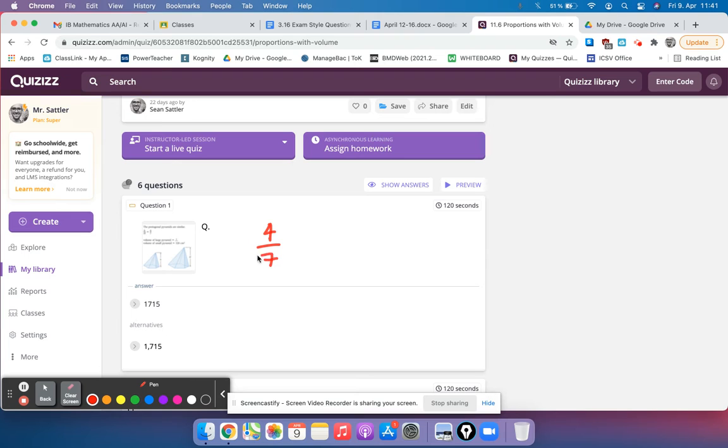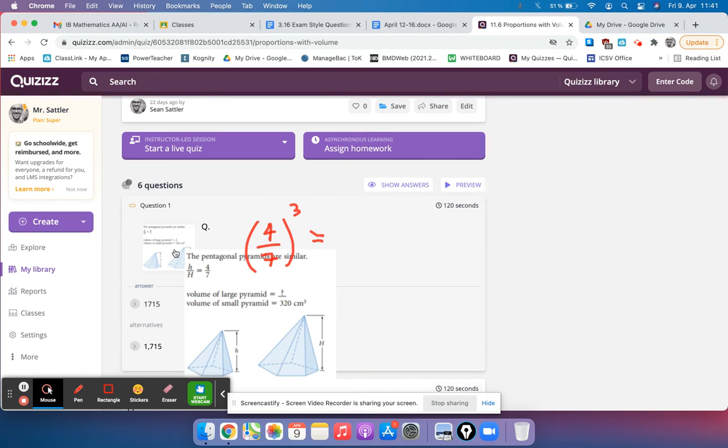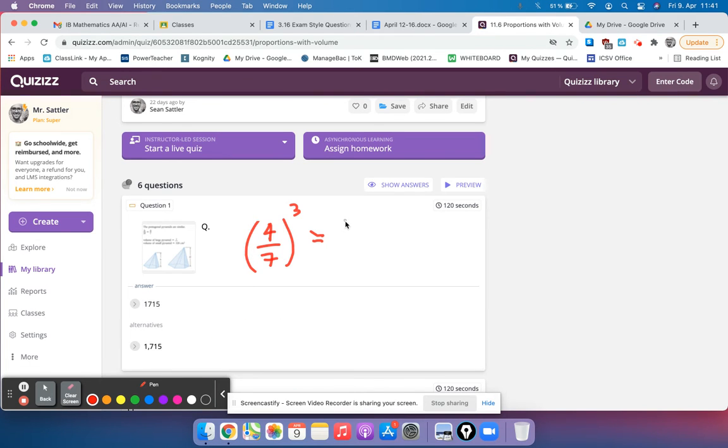4 over 7 cubed is equal to the ratio of the small volume, which is 320, and the large volume will go on the bottom, so I'll put capital V. That's what we're trying to find.